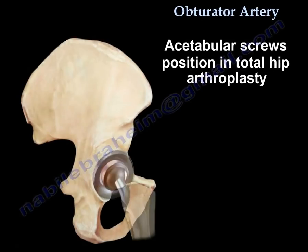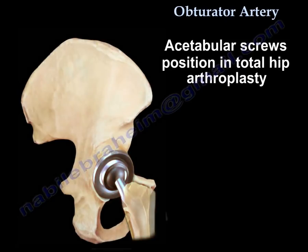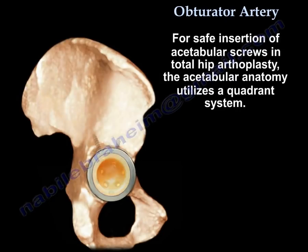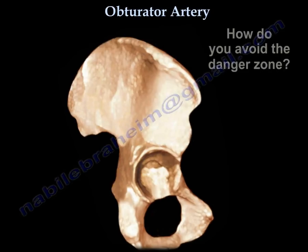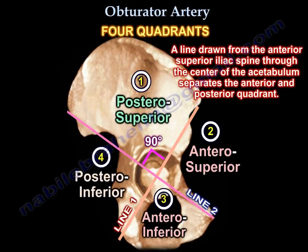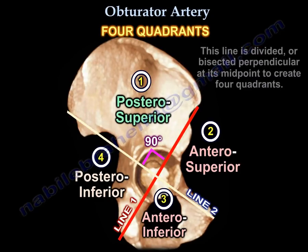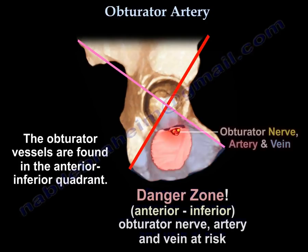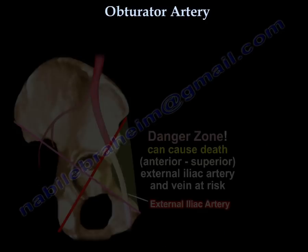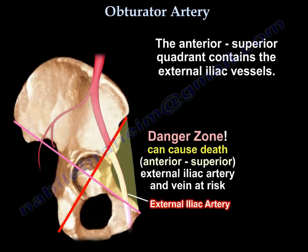The second topic is acetabular screw position in total hip arthroplasty. For safe insertion of acetabular screws, the acetabular anatomy utilizes a quadrant system. A line drawn from the anterior superior iliac spine through the center of the acetabulum separates the anterior and posterior quadrant. This line is bisected perpendicularly at its midpoint to create four quadrants. The obturator vessels are found in the anterior inferior quadrant, and the anterior superior quadrant contains the external iliac vessels.